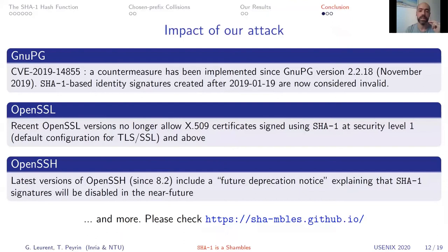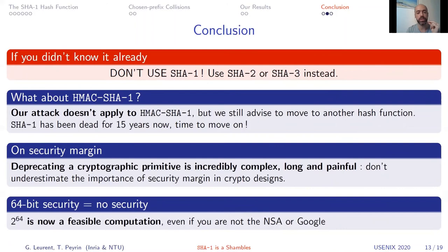Our attack impacts several protocols, all listed on our website. To conclude: do not use SHA-1 if you did not know already. Please only use SHA-2 or SHA-3 — those are excellent hash functions for which no attack is known today. Many people ask about HMAC-SHA-1: our attack does not apply to HMAC-SHA-1, but we still advise moving away from SHA-1 even in HMAC constructions. SHA-1 has been broken for 15 years now — it is time to move on and not use a broken hash function.